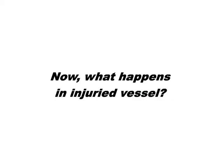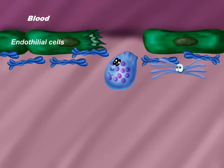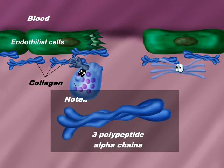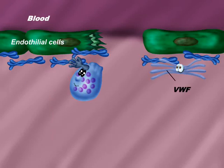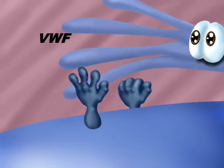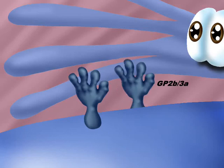At the site of injury, the platelet has a receptor called glycoprotein 1A, which binds the platelet to collagen fibers. Collagen is made of three polypeptide alpha chains. Von Willebrand factor, which mainly comes from endothelial cells and also from platelet alpha granules, binds to glycoprotein 1B receptor. This exposes glycoprotein 2B3A binding sites, which also bind to von Willebrand factor.